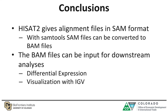In conclusion, HISAT2 gives you alignment files in SAM format. With SAMtools, SAM files can be converted to BAM files, which are binary files that are computer-readable and easy to visualize in IGV. BAM files can also be used for downstream analysis such as differential expression when you count the reads.